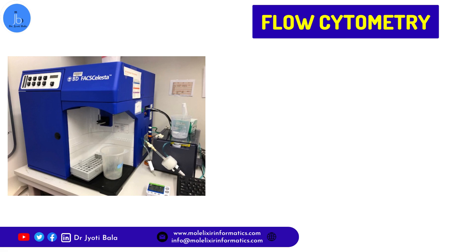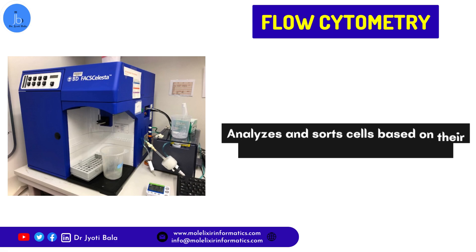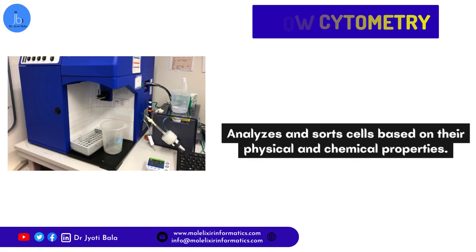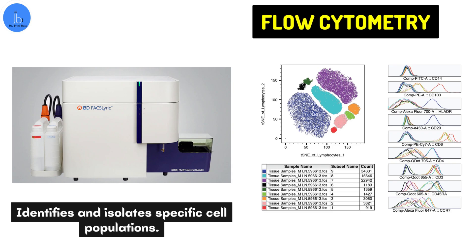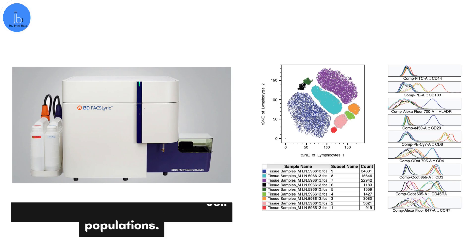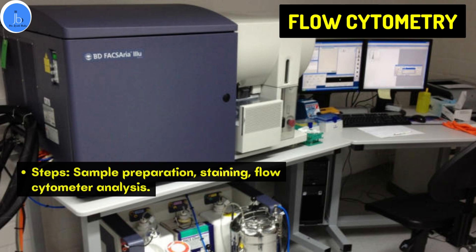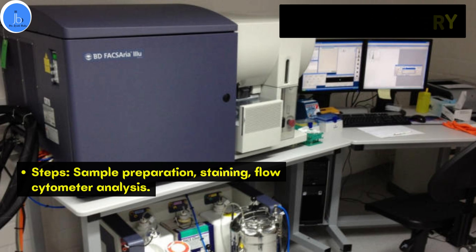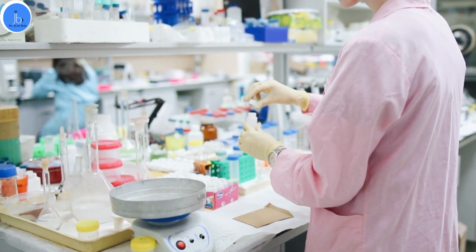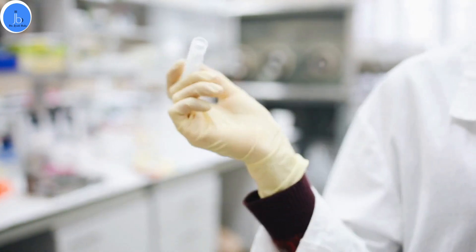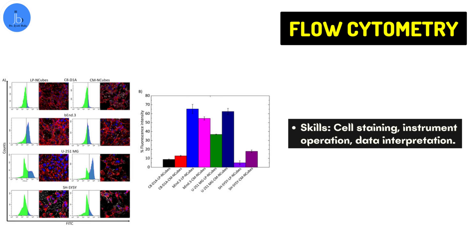Another very significant technique is flow cytometry, which is required to analyze and sort cells based on their physical and chemical properties. It also identifies and isolates specific cell populations, thus it is very crucial in cancer research. In flow cytometry, you need to do sample preparation, staining, and flow cytometry analysis. The skills required are cell staining, instrument operation, and data analysis and interpretation.